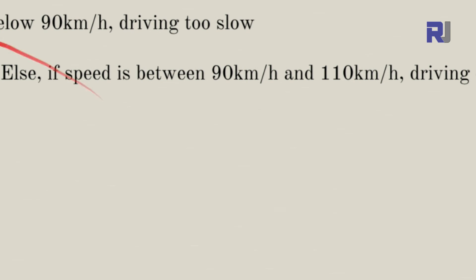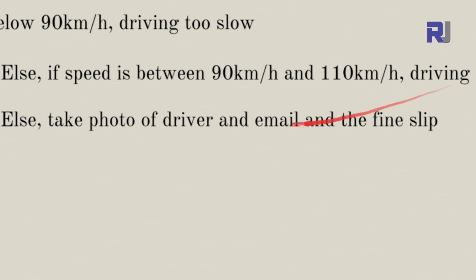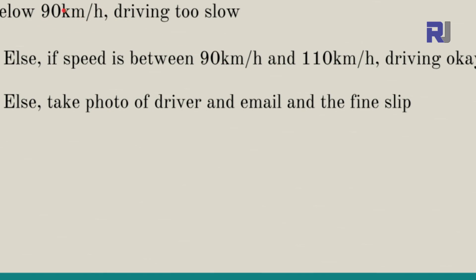Now we introduce else-if: one main condition with sub-conditions within it. Else if speed is between 90 and 110 km/h, the action is 'driving okay.' Think of this as a speed camera. Else — meaning otherwise — if the driver is above 110 km/h, take a photo of the driver and email the fine slip, because the driver is speeding.